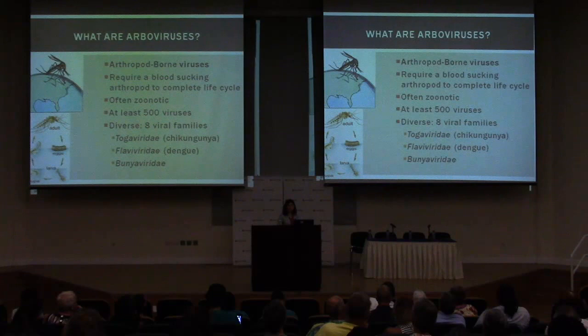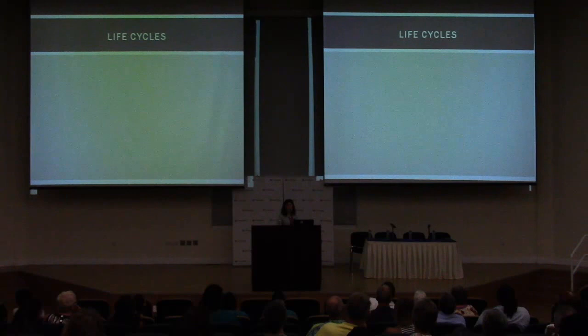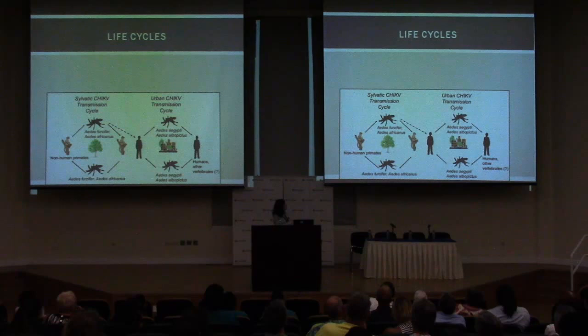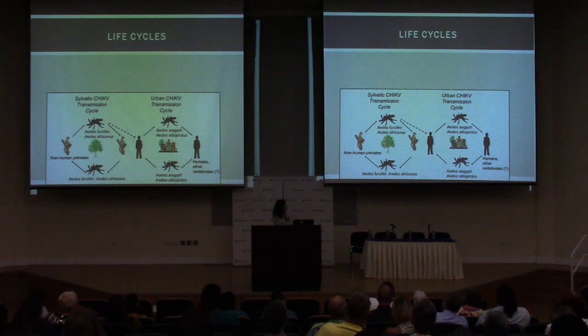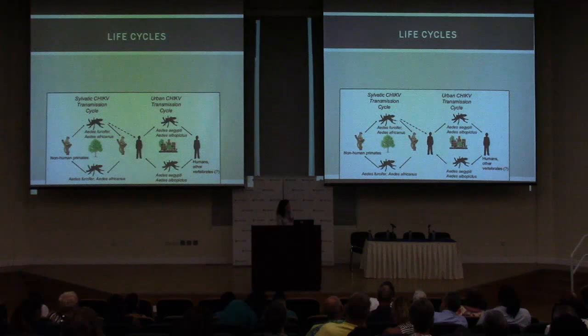To understand what I'm discussing today, it's important to start with life cycles. Chikungunya operates in a sylvatic cycle, involving non-human primates and vector mosquitoes in the jungles of Africa, where it was originally found. Every once in a while this cycle spills over into human populations, creating an urban chikungunya cycle involving humans and Aedes aegypti and Aedes albopictus mosquitoes. Humans get very high levels of virus in their blood, which allows uninfected mosquitoes to feed and spread the infection.